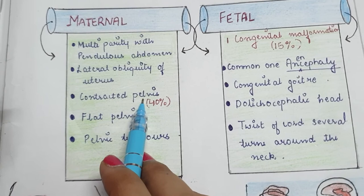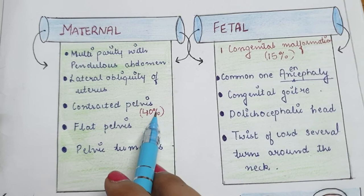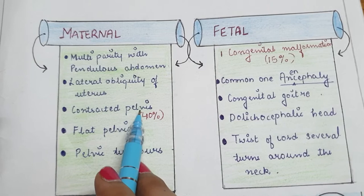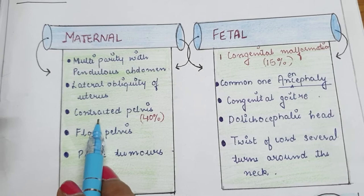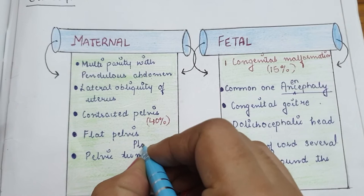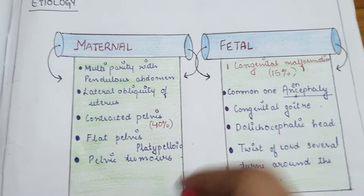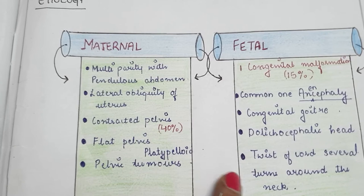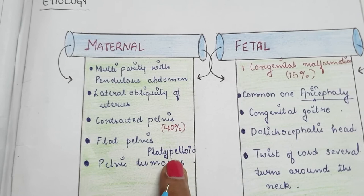Next is contracted pelvis — there is a 40% chance that the cause behind face presentation is contracted pelvis. Next is flat pelvis, also known as platypelloid pelvis. There are four types of pelvis: gynecoid (normal), android, anthropoid, and platypelloid. The flat type pelvis is platypelloid, which favors face presentation. Next is pelvic tumors.